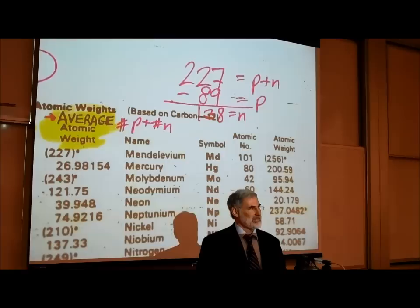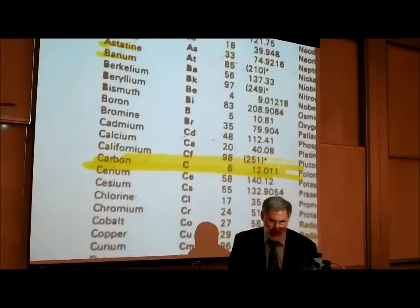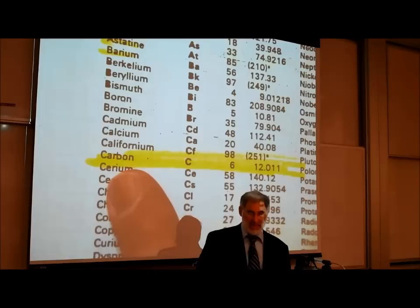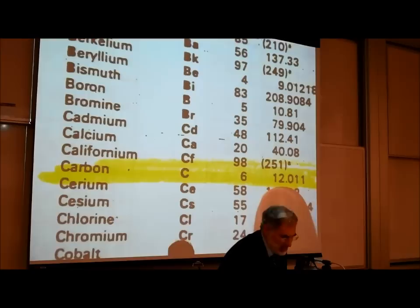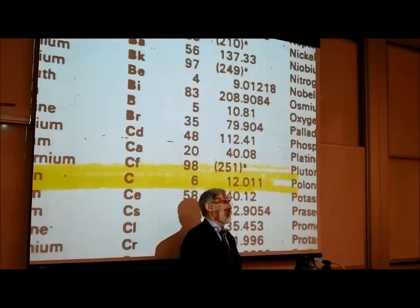You're going to be reading chapter two. Let's look at another example — carbon. Carbon, the most important of all the elements making up living things, has an abbreviation of C and an atomic number of six. That's the number of protons. It has an average weight of 12.011.